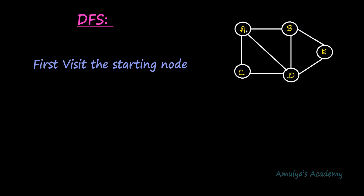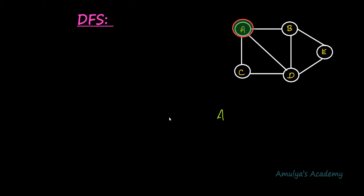The first step is to start the traversal operation from the starting node and visit it. So here we visit A — A is visited. The next step is to visit an adjacent node of the starting node. A node can have more than one adjacent node; here A is adjacent to B, C, and D. You can visit any adjacent unvisited node. Here I will choose B, so B is visited. Now A and B are visited.